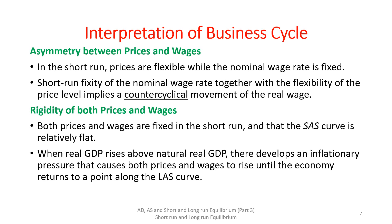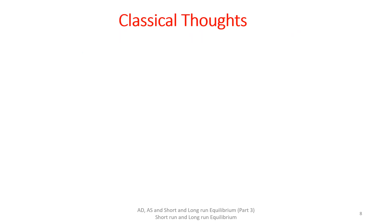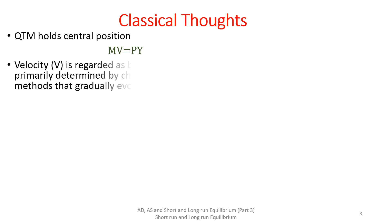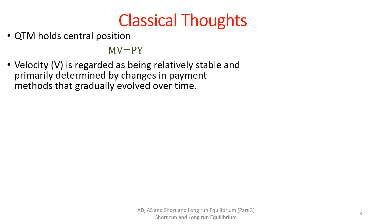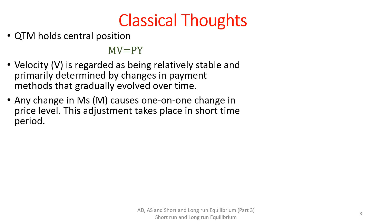Now let's study this demand shock and business cycle phenomenon according to two prominent macroeconomic schools of thought: the classicals and the Keynesians. In classical thought, the quantity theory of money holds a central position. The QTM states that MV = PY, where M is money supply, V is velocity, P is the price level, and Y is the real output level. Velocity is regarded as relatively stable, primarily determined by gradual changes in payment methods over time. Any monetary policy change causes a one-on-one change in price level, and this adjustment takes place in a short, ignorable period of time.